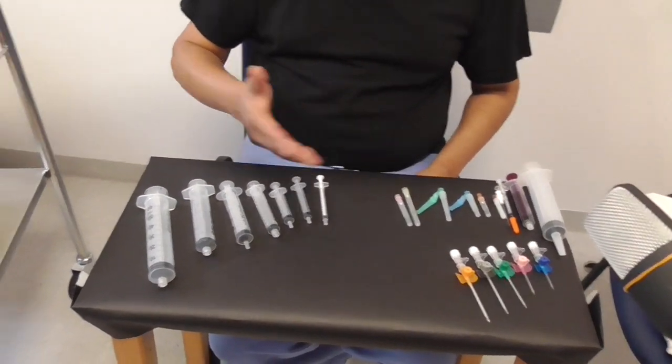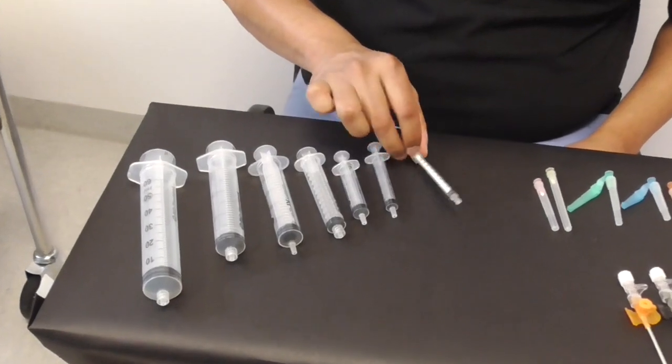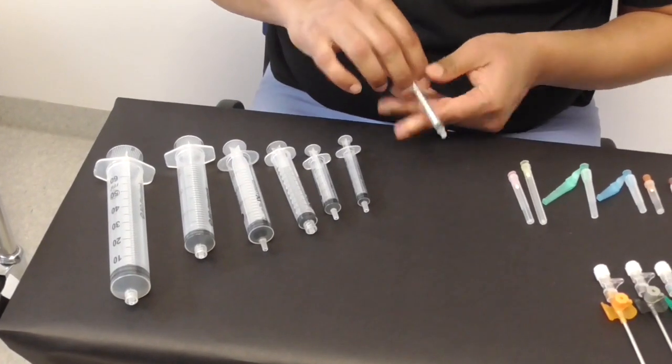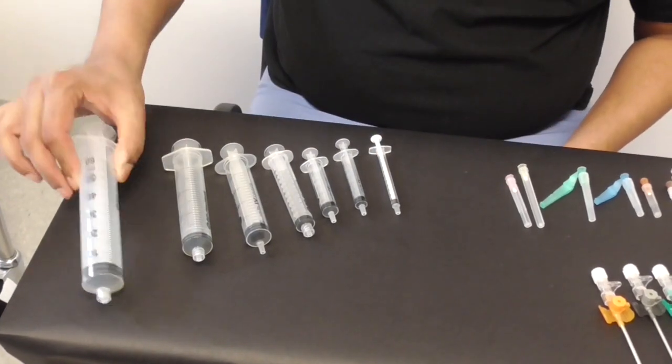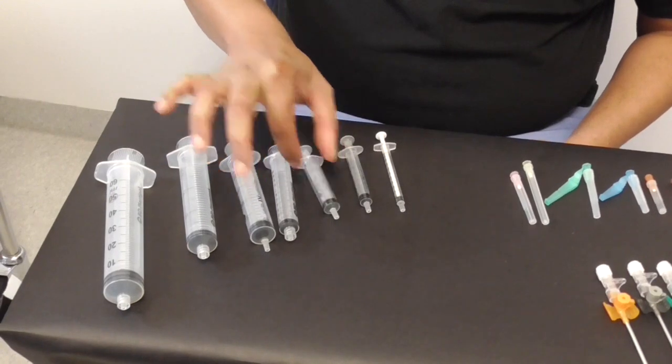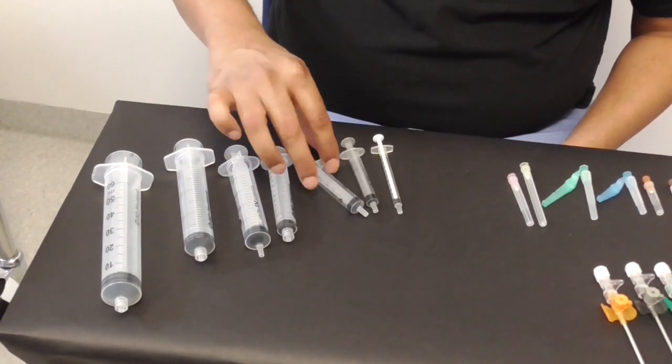So syringes come in a very wide range of sizes. As you can see this one's a one mil syringe so this entire thing just only holds one mil all the way up to 60 mils. The most commonly used ones are 10 mils, 5 mils, 20 mils. So you've got a wide range of sizes of syringes.